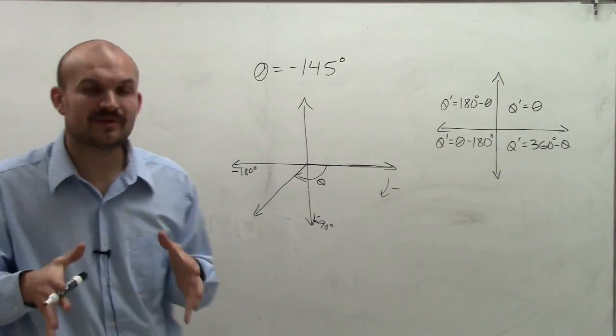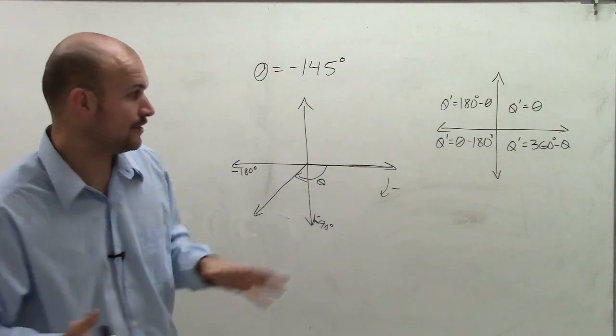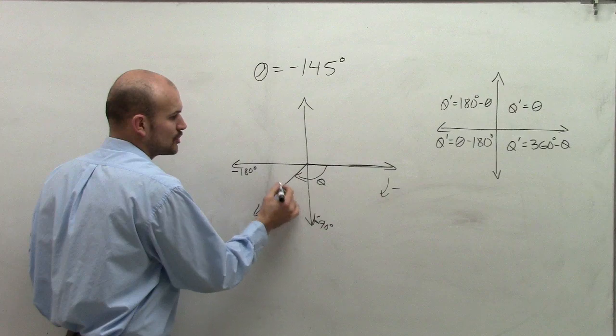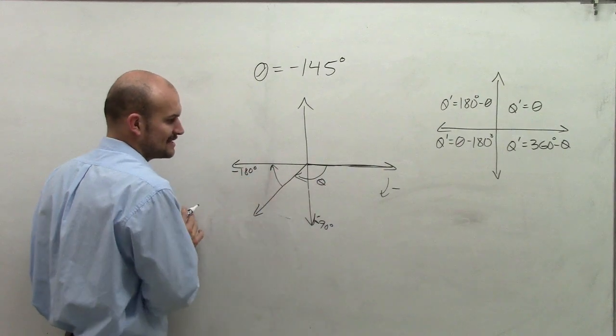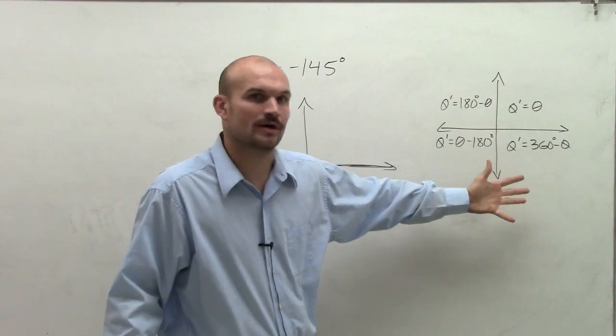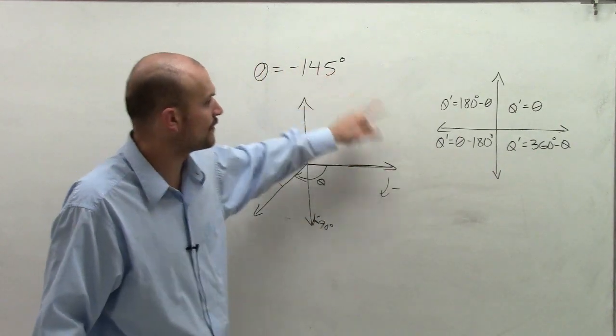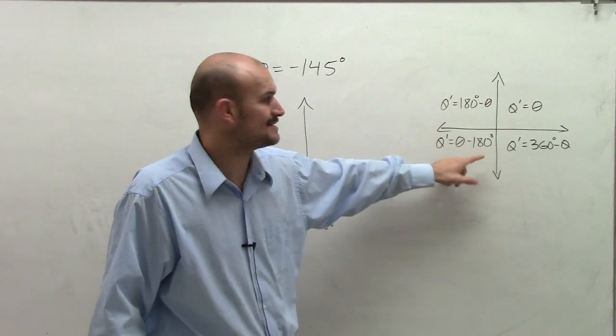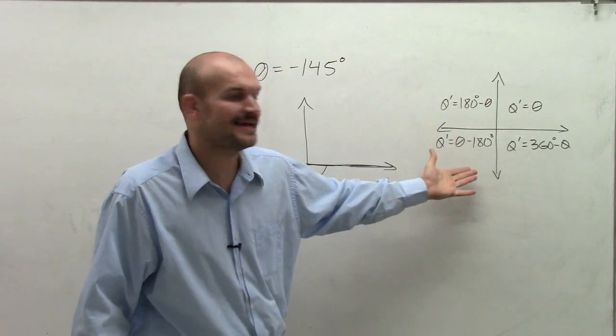Now, the problem with using a negative angle for a reference angle is you can still determine what the reference angle is, because the reference angle is your terminal side to your horizontal axis. But to plug it into one of these formulas is not going to work. Because if you look at it, if I say theta equals negative 145, well, negative 145 minus 180 degrees is not going to give me an acute angle.